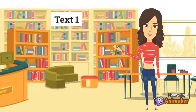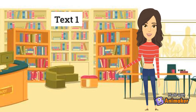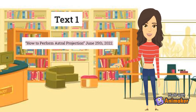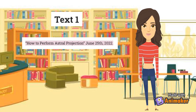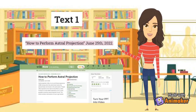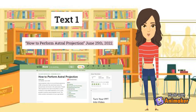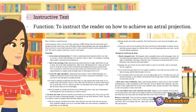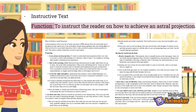Hello, I'm Javira Miranda, and the first text that we are going to analyze is called "How to Perform Astral Projection," and it was published on June 25th, 2022. First of all, the genre of this text is instructive. Its function is to instruct and guide the reader with the steps, illustrating how to do something — in this case, to achieve an astral projection.